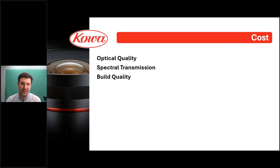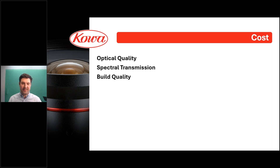Cost is something to consider, especially if you're providing a commercial solution or working within a project budget. Higher-cost lenses often provide better optical quality, including higher resolution, lower distortion, better chromatic aberration correction, and better spectral transmission. Build quality is also a factor — COA has lenses that are resistant to shock and vibration. You need to think about whether the lens will hold up long-term in its environment. But more expensive lenses don't always mean a better system — look at all the factors we've discussed, identify your specific needs and requirements, and find the best balance of cost and performance.